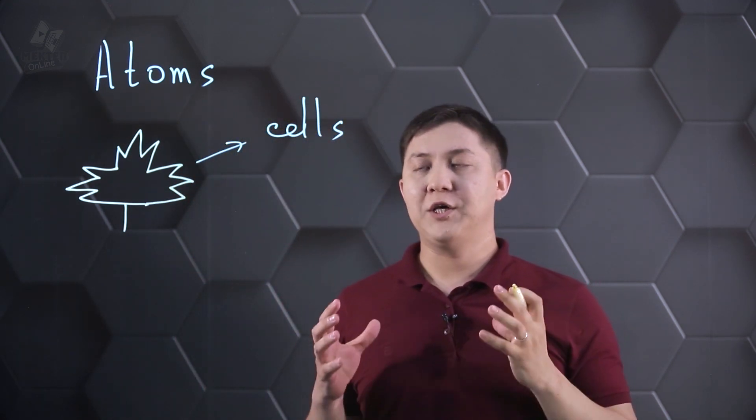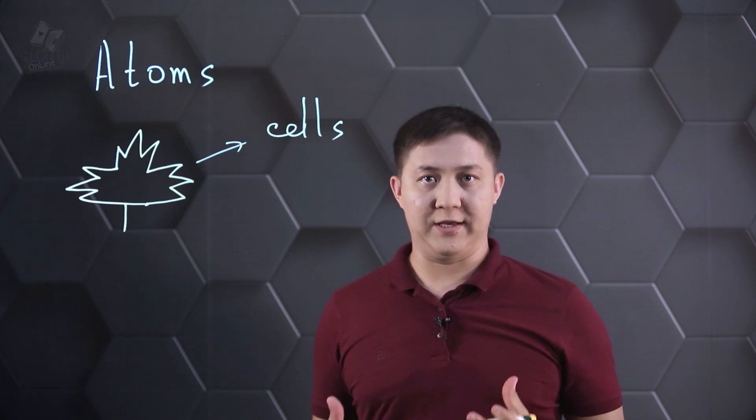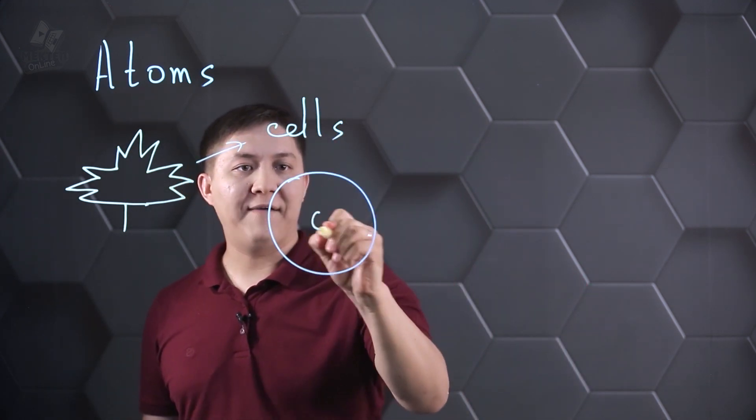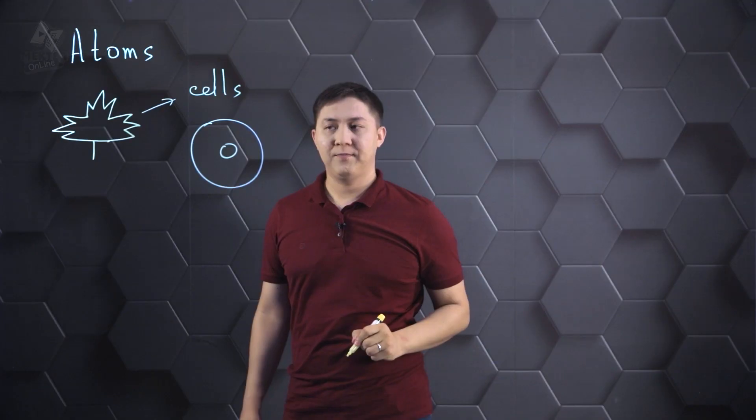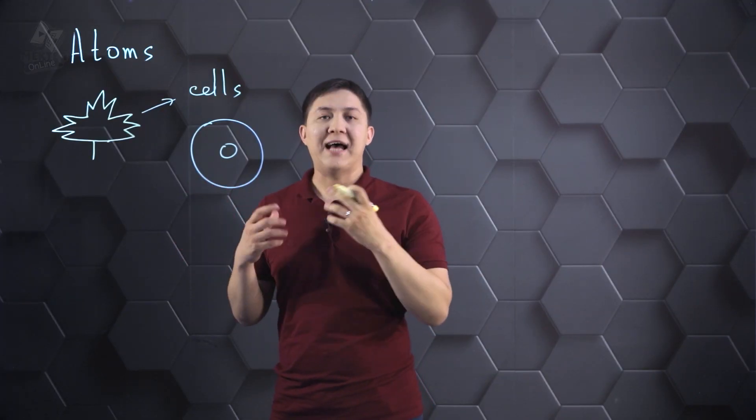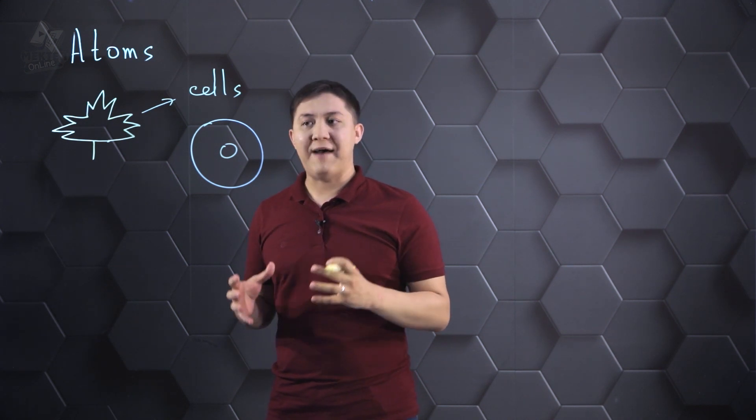Cell is a small unit of any living organism, and inside of the cell we have a nucleus. Maple leaf has a plant cell. Inside of that plant cell, we have a DNA.